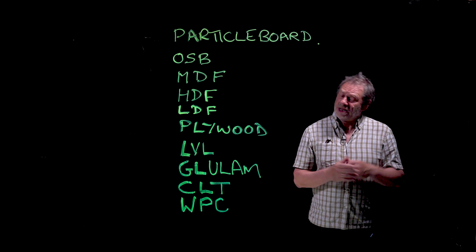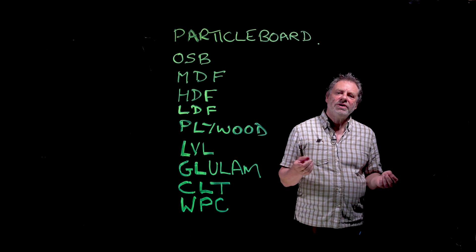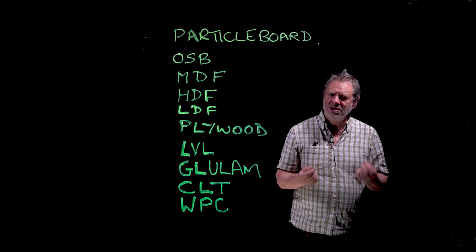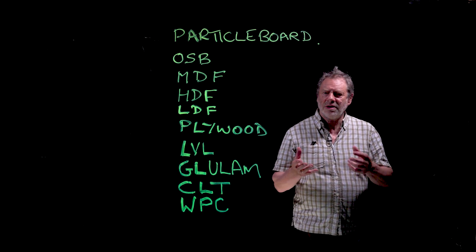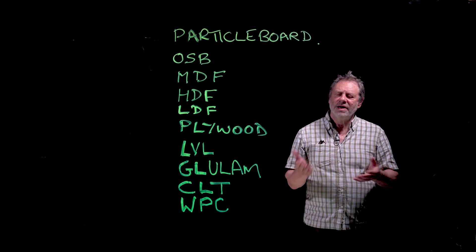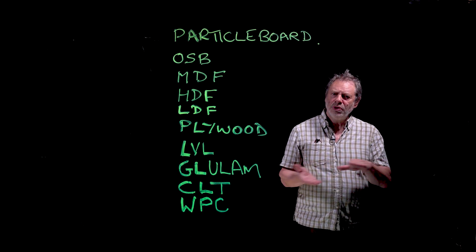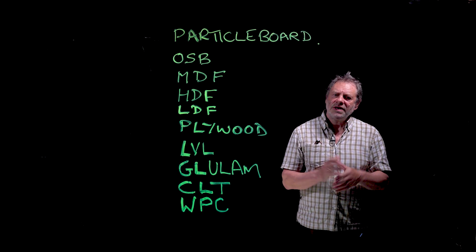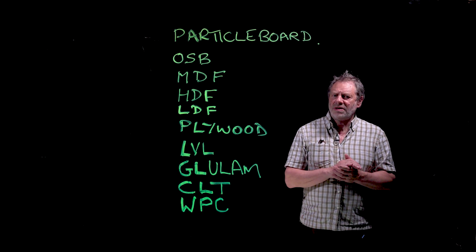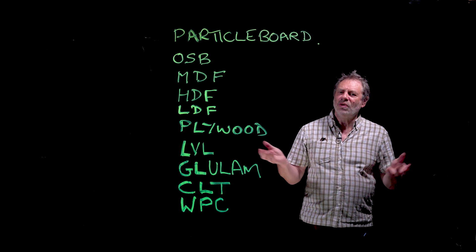Particle board products used to be pretty dreadful, but the technology has improved considerably. Modern particle board products have a core and a surface, where the surface is usually made of much smaller particles. They might use centrifugal or air classification systems to separate particles by size - smaller ones on the surface - so you get a smoother surface effect. You can get screws in, you can sand it, but if you cut through that surface you're into the bigger particles and it's a bit more like cornflakes.